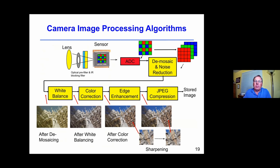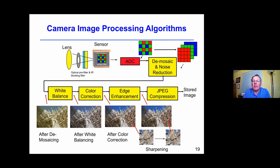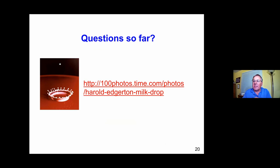During my early years at Kodak in the 1980s and early 1990s, I did a lot of work developing digital algorithms to process color images. You start with the color sensor with its filter overlay, turn it into digital data, then demosaic it so you have red, green, and blue pixels at each point. Then you do white balance to compensate for the illuminant — indoors or outside under daylight — then color correction for the spectral sensitivities of the sensor, sharpening and edge enhancement to compensate for the lens, and finally JPEG compression. This processing pipeline is used today in most color imaging systems.